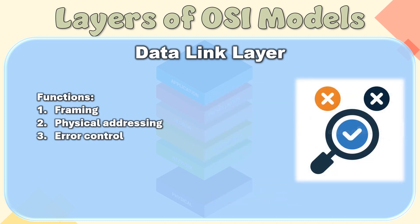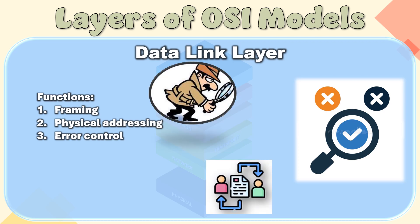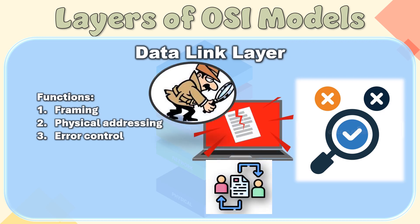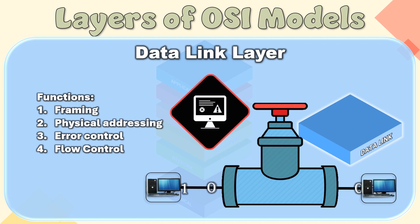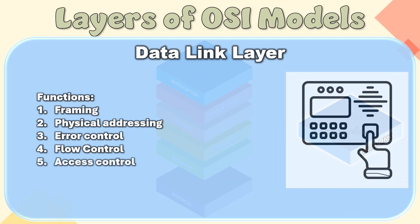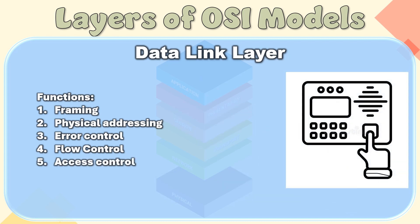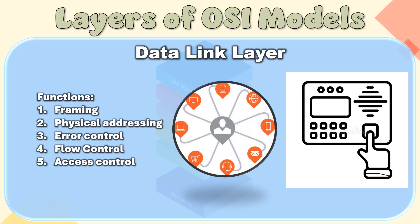Error Control: The data link layer provides the mechanism of error control, in which it detects and retransmits damaged or lost frames. Flow Control: The data rate must be constant on both sides, else the data may get corrupted. Flow control coordinates the amount of data that can be sent before receiving an acknowledgement. Access Control: When a single communication channel is shared by multiple devices, the MAC sublayer of the data link layer helps to determine which device has control over the channel at a given time.